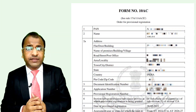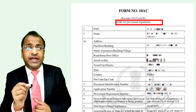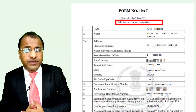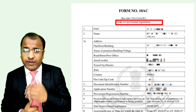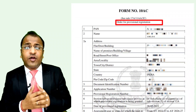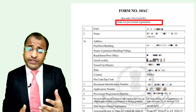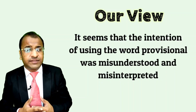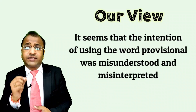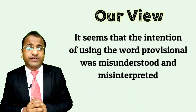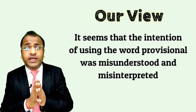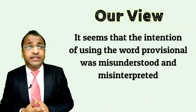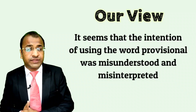On a plain reading of the amendment, it was understood that provisional registrations shall be granted only to new organizations for a period of 3 years, and for existing organizations, permanent registration shall be granted with a validity of 5 years. But here we can see that even in renewal cases, an order for provisional registration is being passed. In our view, it seems that the intention of using the word 'provisional' was misunderstood and misinterpreted. Since this time, the renewal is being granted without any verification or investigation of documents, as no powers to call for any documents were conferred upon the concerned authorities. As per the provisions laid down in the amended act, the word 'provisional' is being used even in such cases.